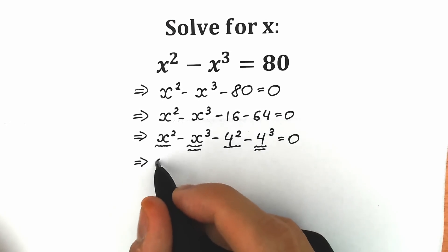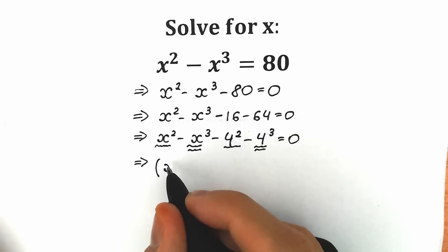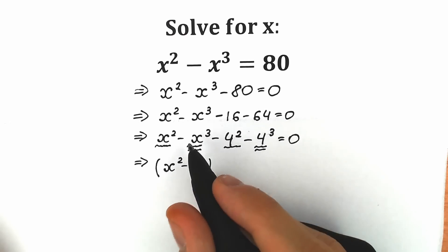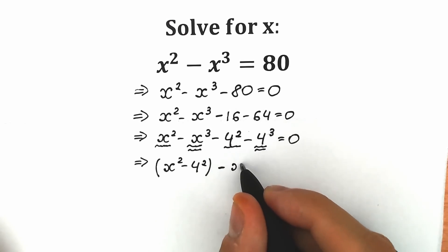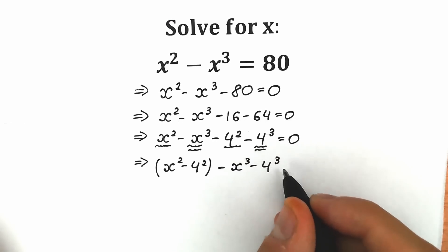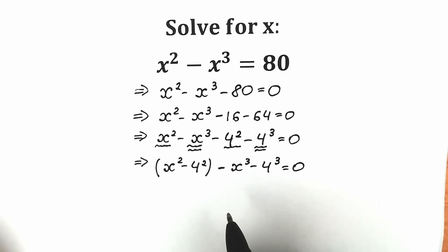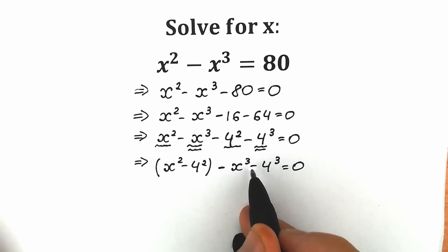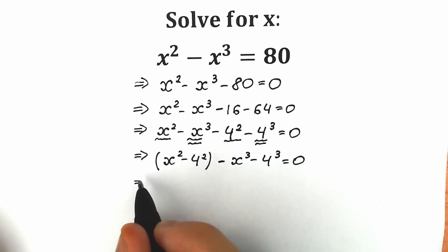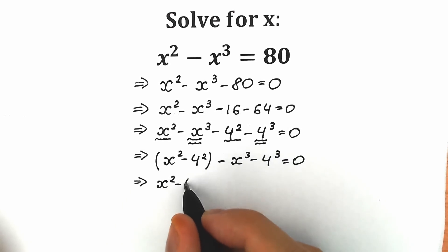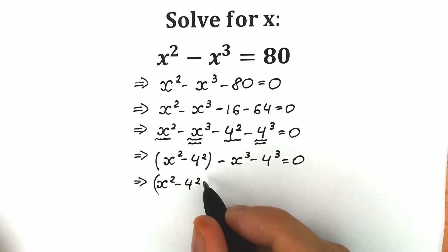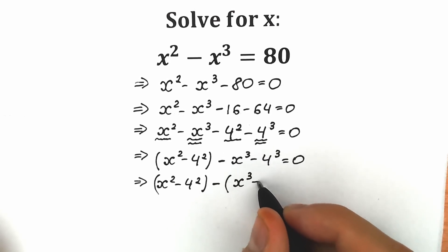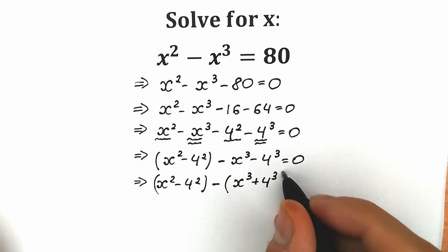As a result, we take inside parentheses x squared minus 4 squared. Then we write minus x cubed minus 4 cubed. Right now let's create a parenthesis here, and if we factor out minus 1, we need to put a plus inside. So we have (x squared minus 4 squared) minus (x cubed plus 4 cubed) equal to zero.